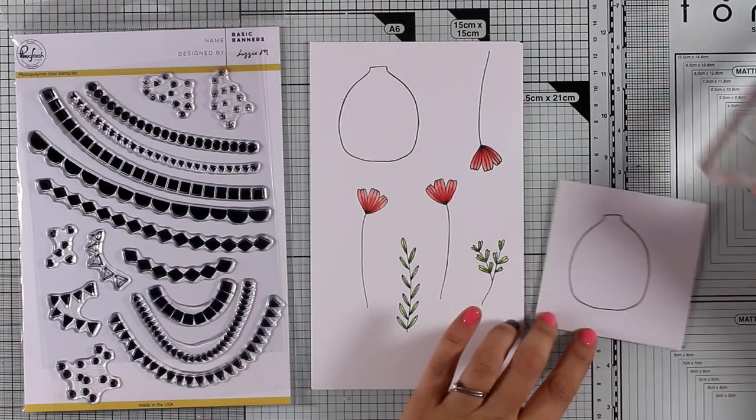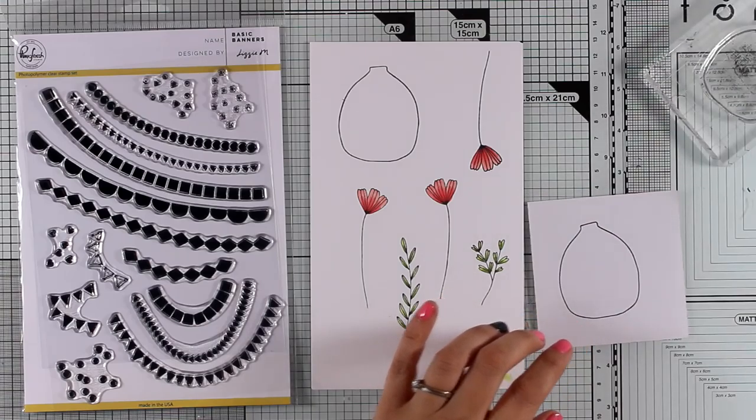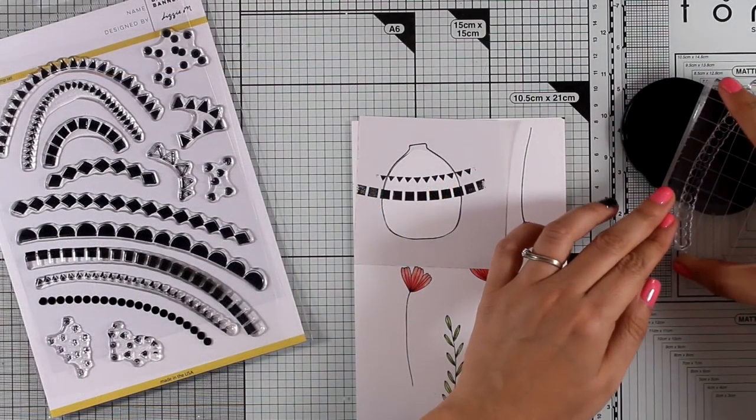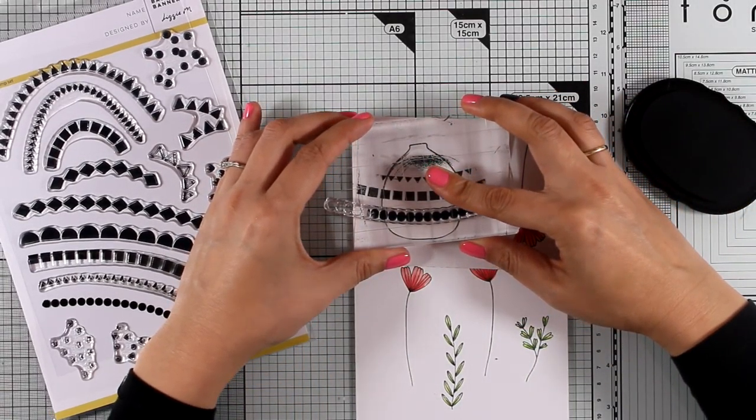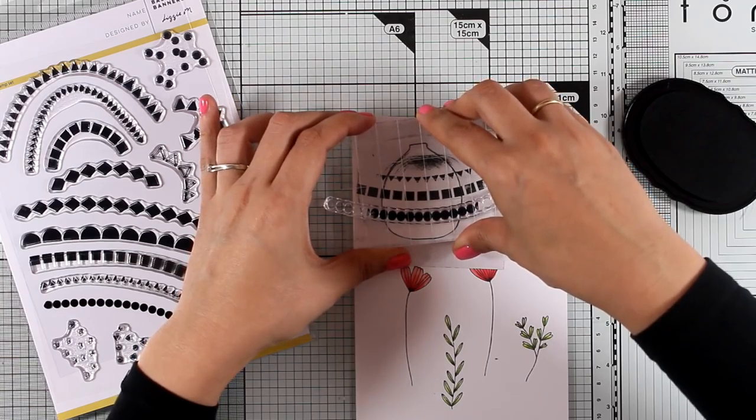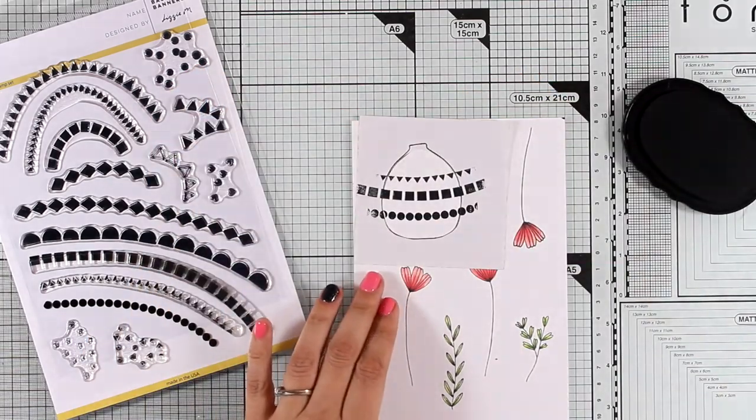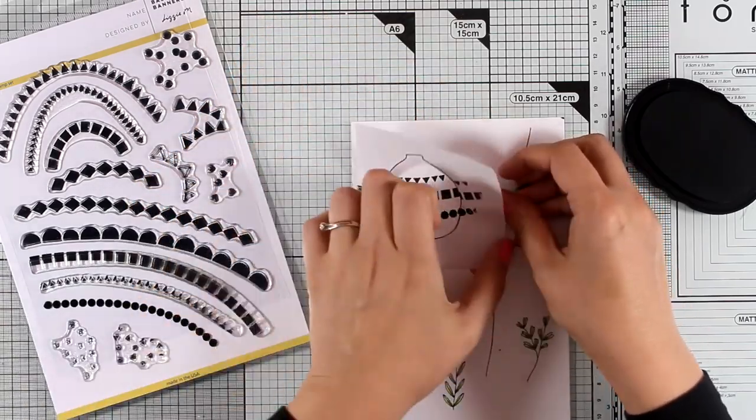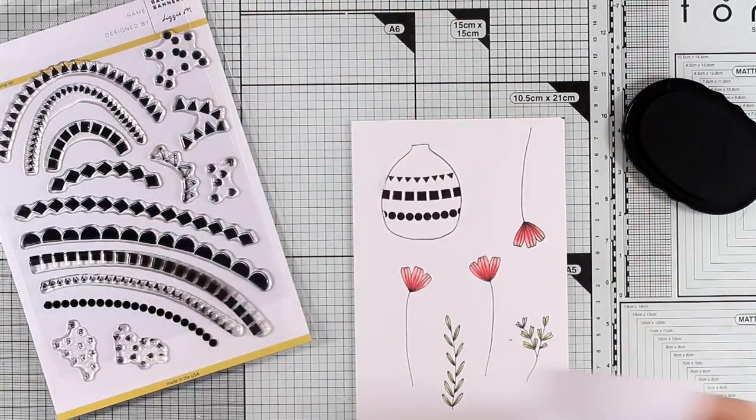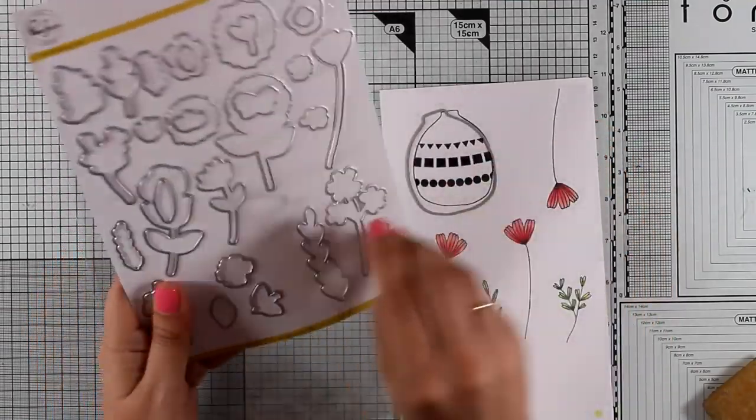I'm going to stamp the vase one time on a scrap piece of paper to create a mask, which I'll stick on top of my vase. Then I'm using black ink to stamp the banners. I decided to go with different banners just for some variation. Now I can peel off the mask, and you can see that my vase is looking better since it has all that design on top.